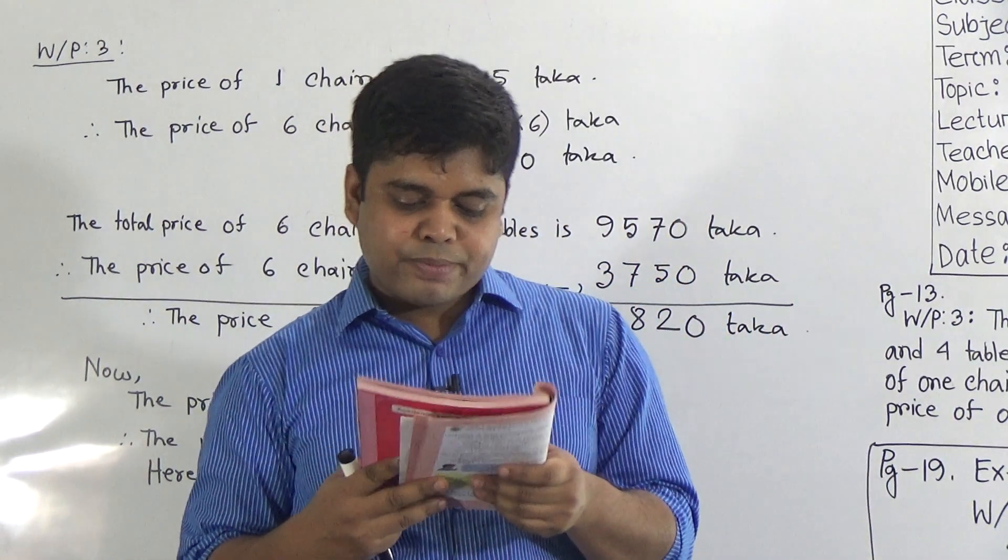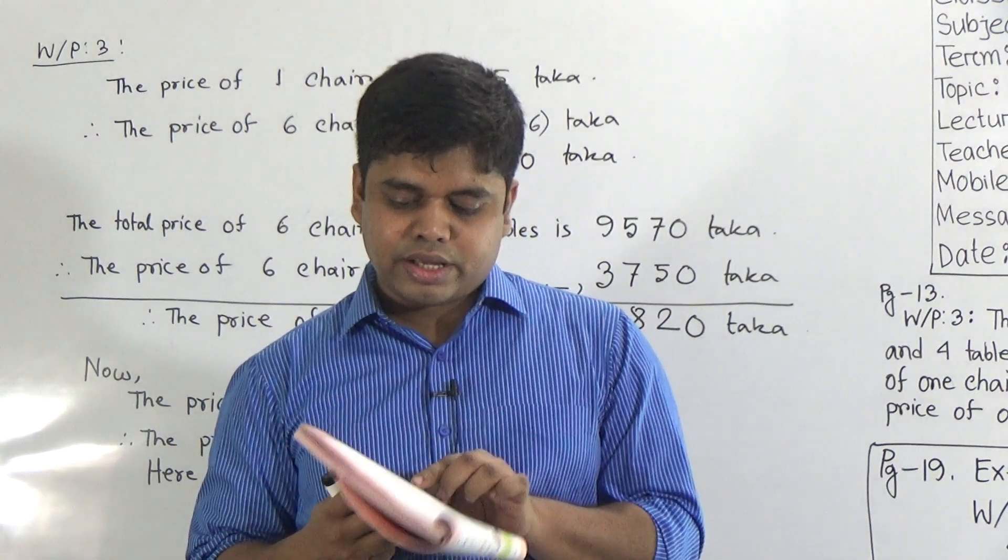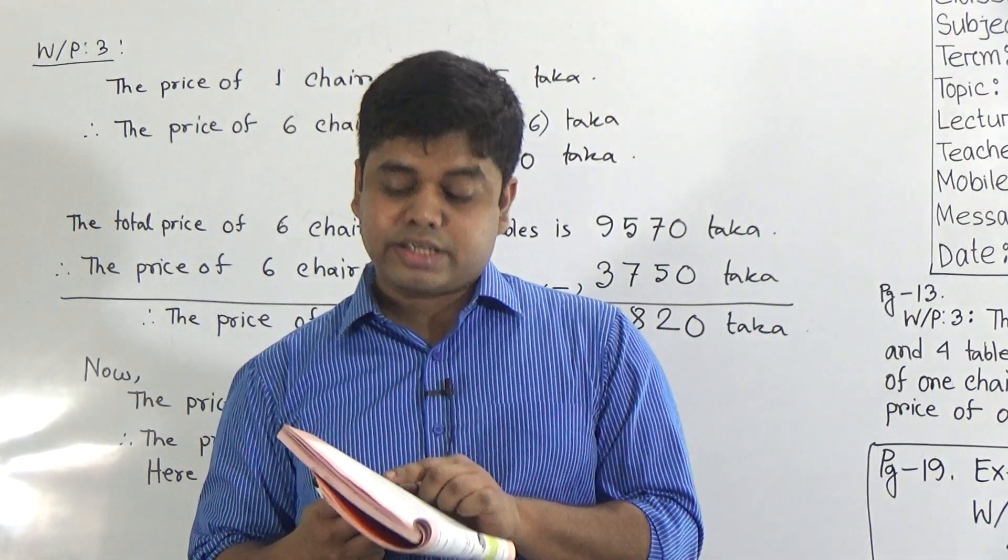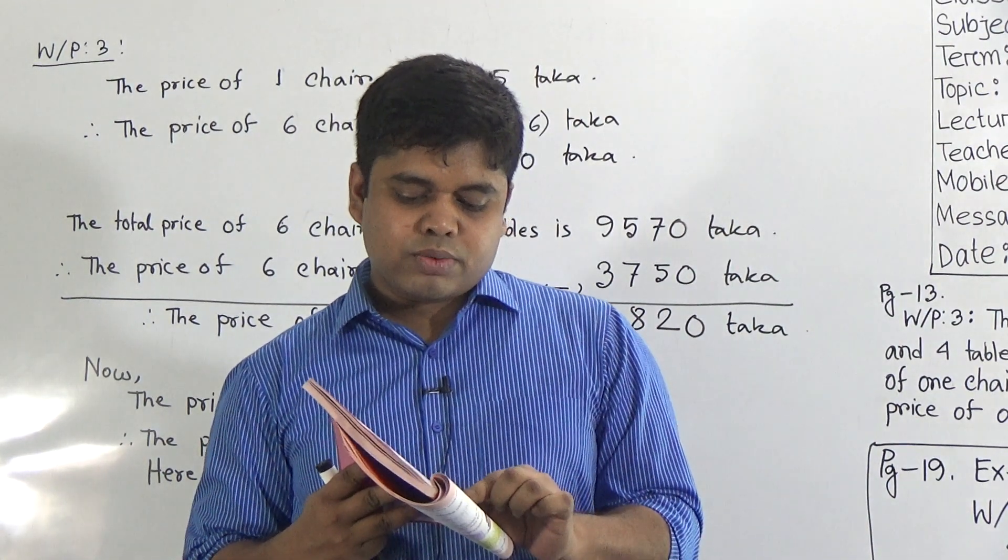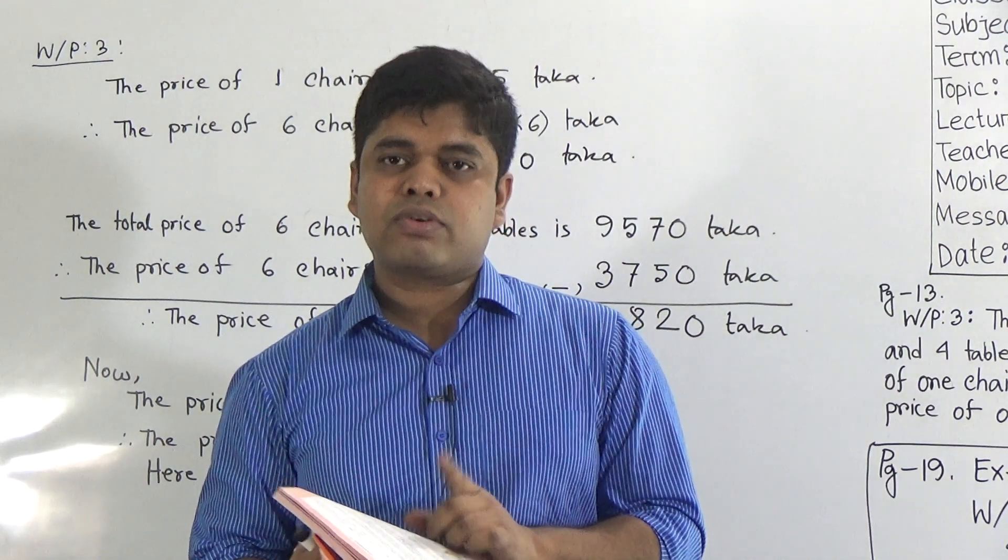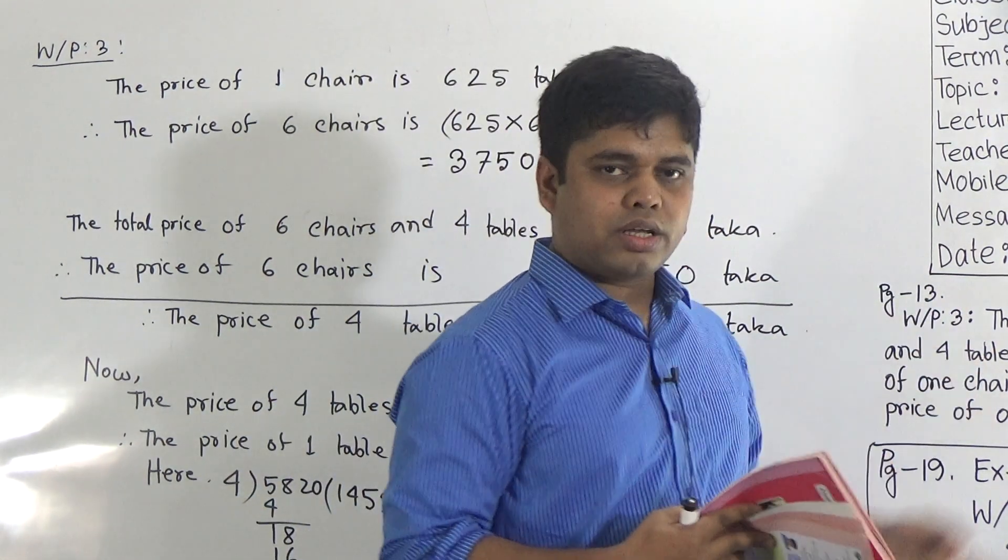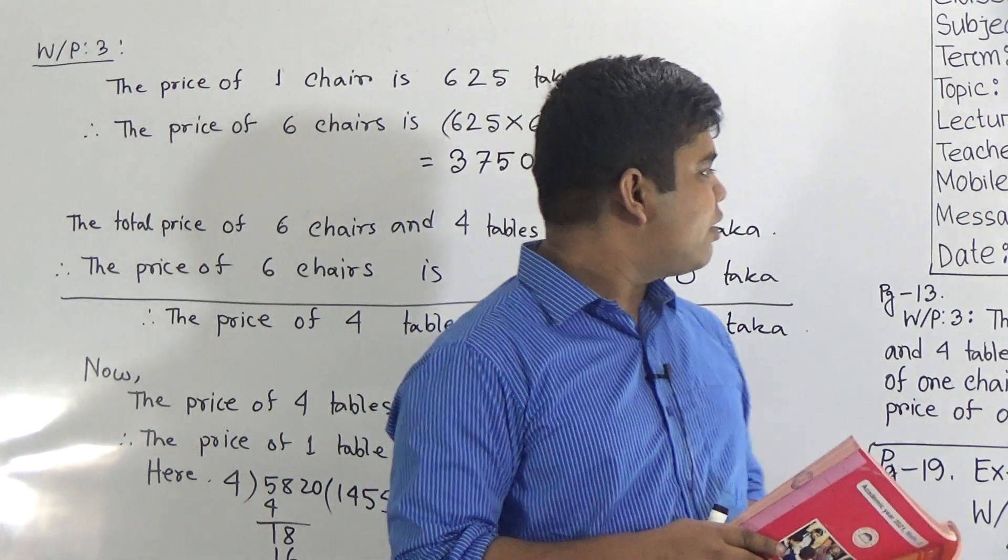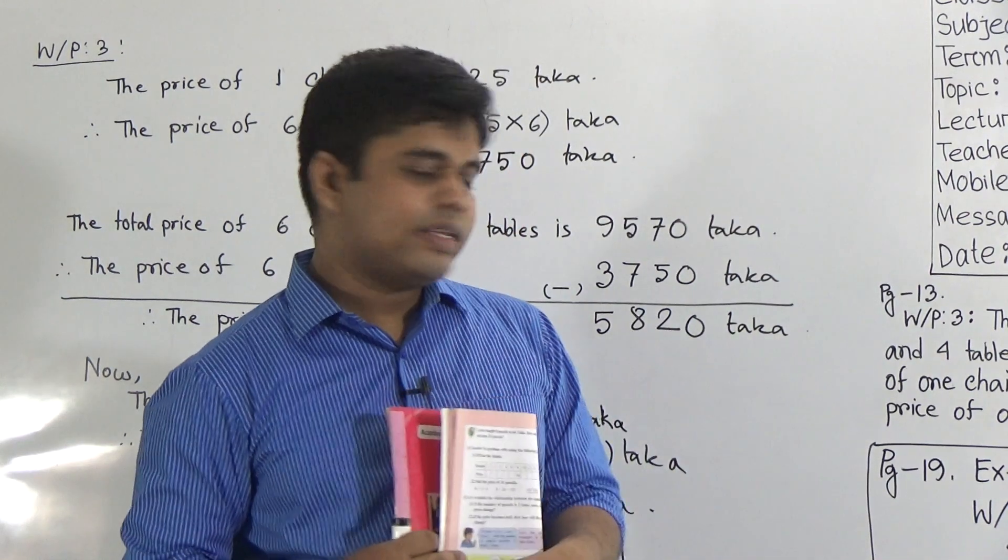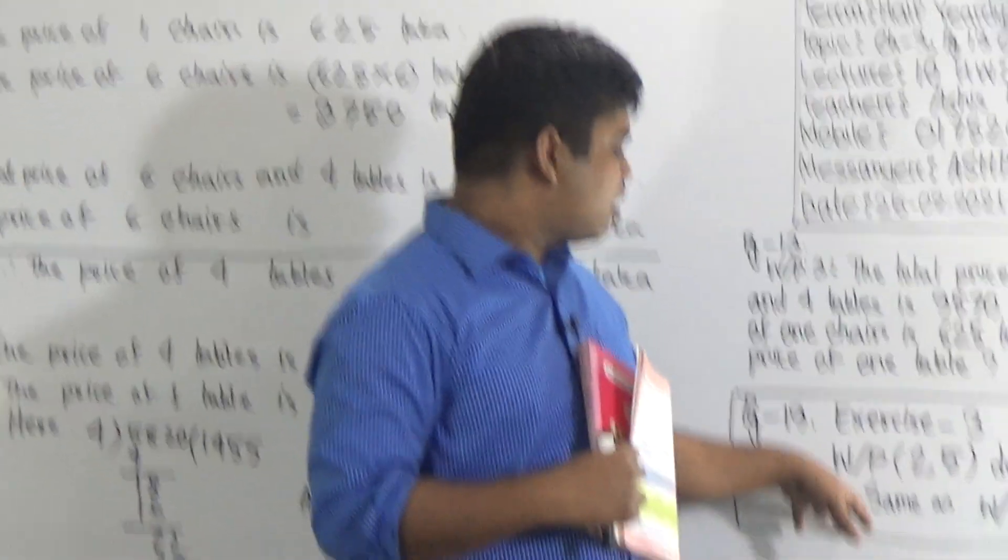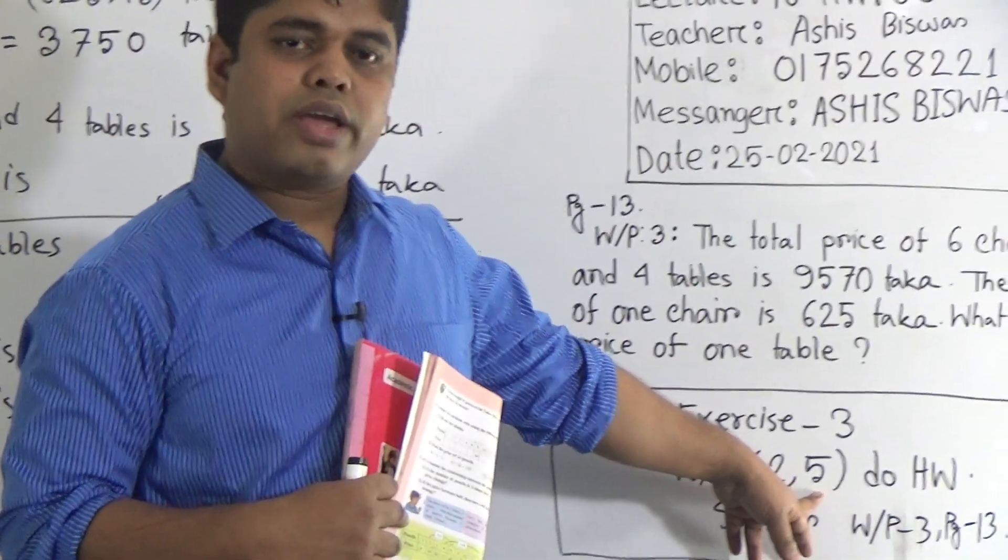Now, number 5: The price of two cows and three goats together is 45,080 taka. The price of one goat is 4560 taka. What is the price of one cow? So this is also similar to this one. So my dear students, I think you have easily understood this class and you can easily solve this math, problem number 2 and 5 at home as your SW.